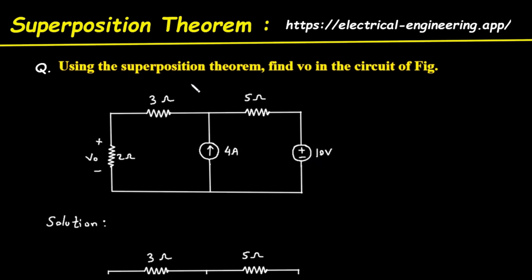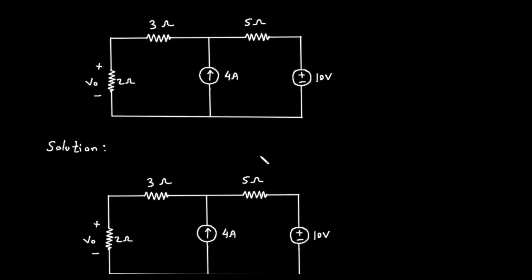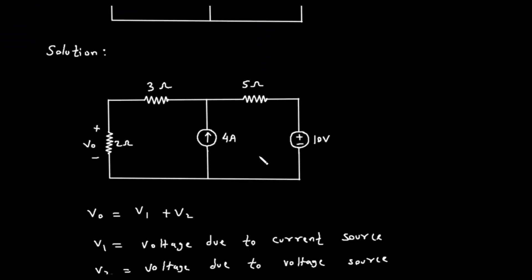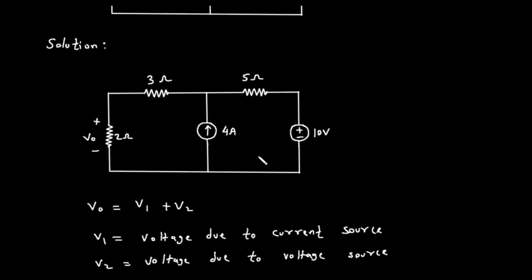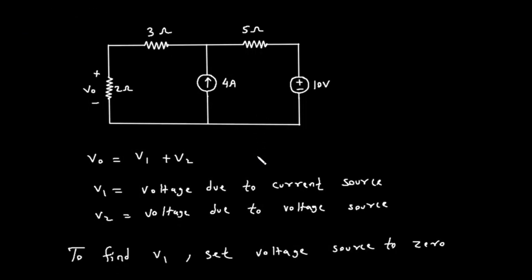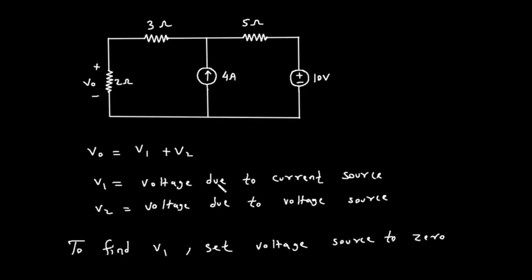The superposition theorem states that in a linear circuit with multiple independent sources, the total response — in this case, the voltage V0 — is the sum of the responses caused by each independent source acting alone. So we will find the voltage across the 2 ohm resistor due to the current source first, which we'll call V1. Then we'll find the voltage due to the voltage source, which we'll call V2. The final answer, V0, will be the sum of V1 and V2.